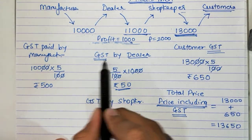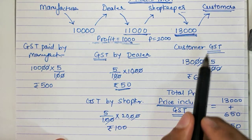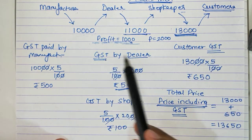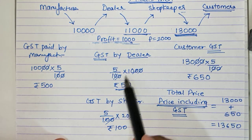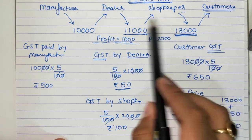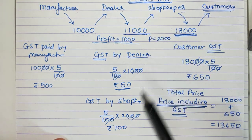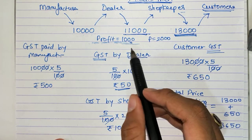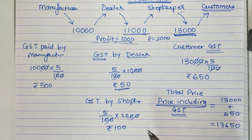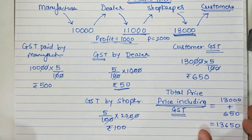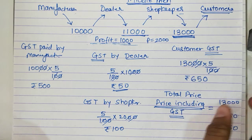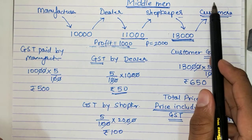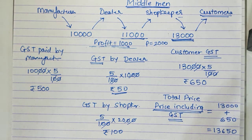GST paid always goes to the government. GST paid by dealer is 5% of his profit; GST paid by shopkeeper is 5% of his profit. The most important thing to understand is: the middleman pays GST on profit, and the first and last person - manufacturer and customer - pay GST on the full amount.